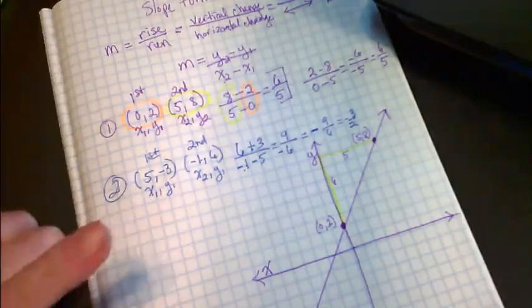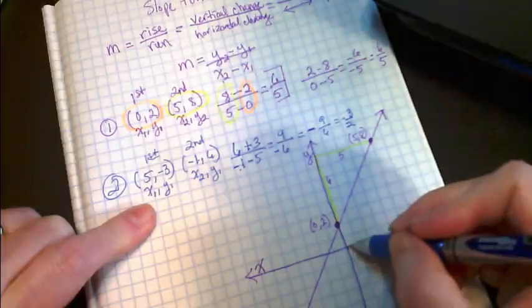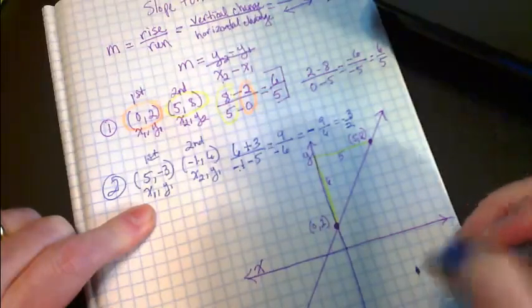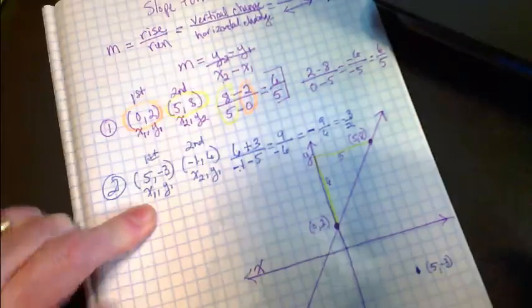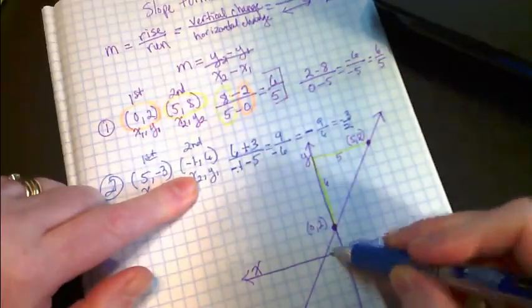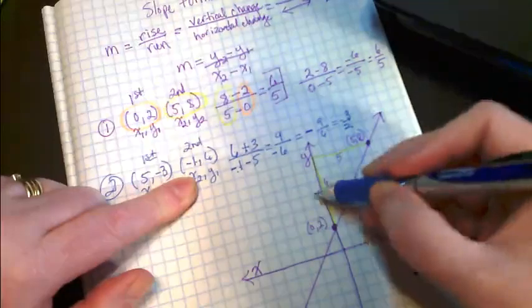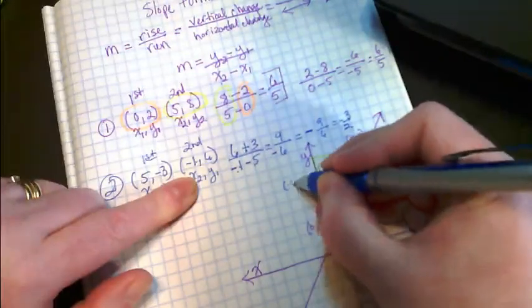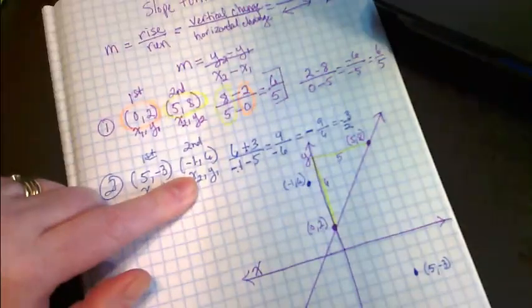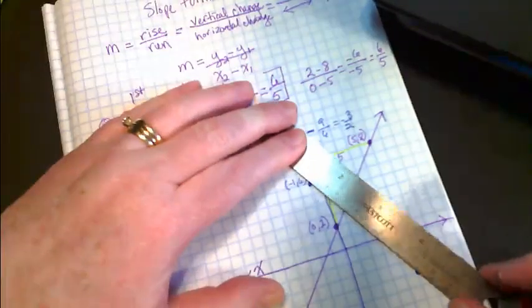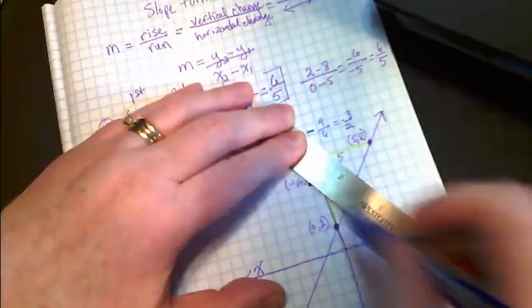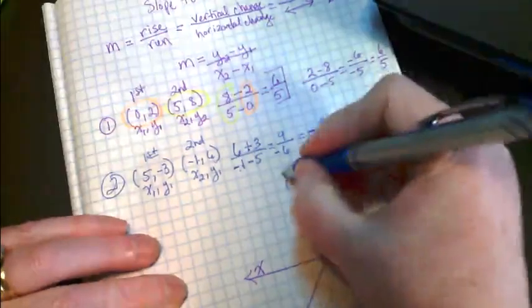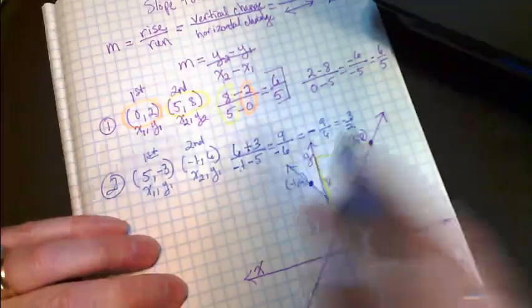Let's just see if that plays out if I graph that on here. So 5, negative 3. Let's label that, 5, negative 3. And the second pair is negative 1 and 6. You can see how these two points are pretty far apart. When I connect these two points to make this line, I'm getting a negative slope. Which makes sense, because we found that the slope was negative 3 over 2.